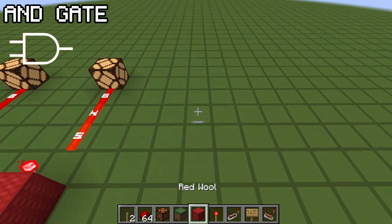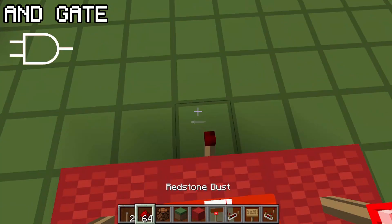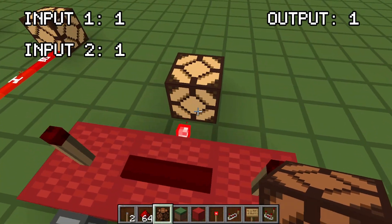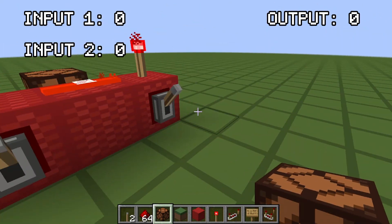Next is the AND gate, which only turns on when both inputs are on. If both levers are on, then the output is one. Anything else, it's zero.